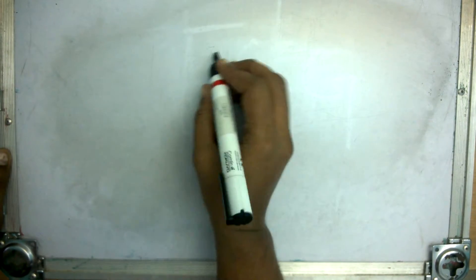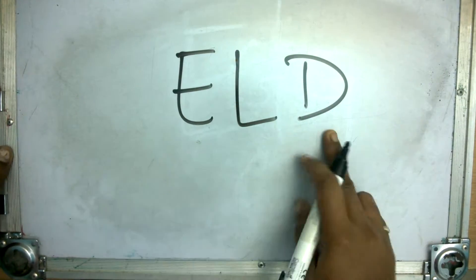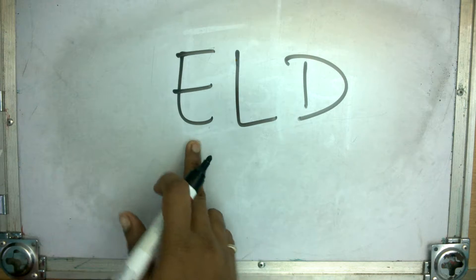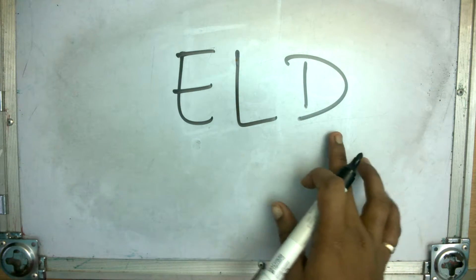Next word E, L, D, ELD. E sounds A, L sounds L, D sounds T.